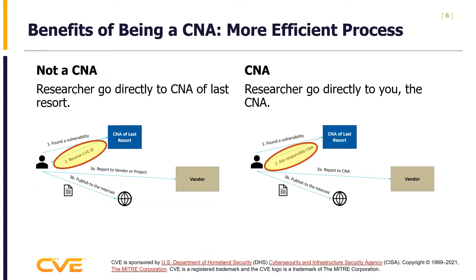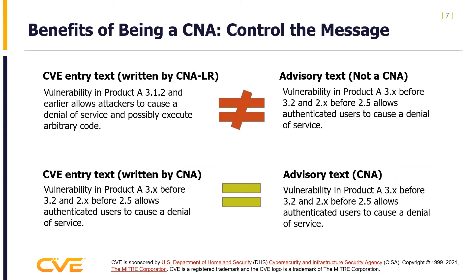CNAs allow CVE IDs to be produced more quickly and in a more distributed manner. CNAs can publicly disclose a vulnerability with an already assigned CVE ID, and researchers requesting a CVE ID for vulnerabilities within your scope go directly to you, the CNA, instead of the CNA of last resort. The process becomes more efficient since the CNA can communicate vulnerabilities quicker to their customer base. CNAs get to control the CVE publication release process and the disclosure of vulnerability information.